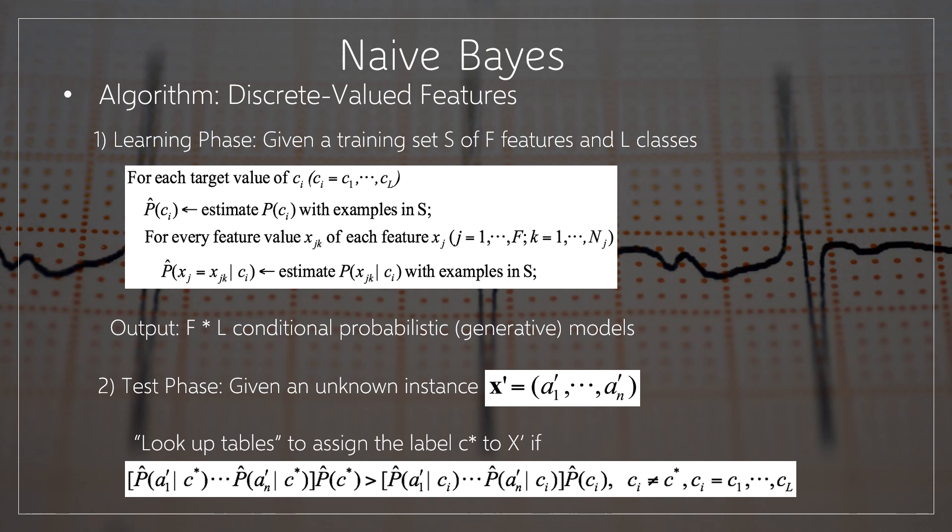The output is F star L conditional probabilistic generative models. The second phase is the test phase, where we are given an unknown instance X dash equal to A1 dash, A2 dash, so on up to AN dash. Here we use lookup tables to assign the label C star to X dash if P-cap of A1 dash given C star, so on up to P-cap of AN dash given C star, into P-cap of C star, is greater than P-cap of A1 dash given CI, so on up to P-cap of AN dash given CI, into P-cap of CI, where CI is not equal to C star and CI is ranging from C1, C2, so on up to CL.